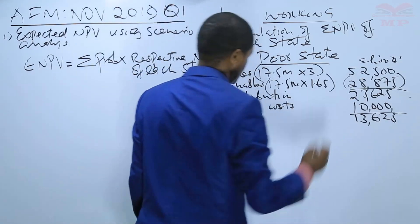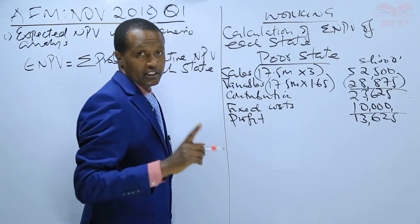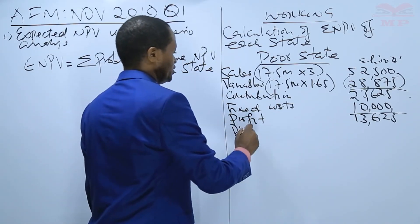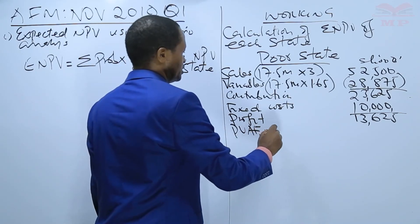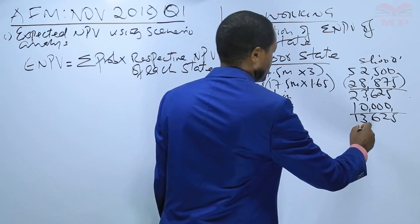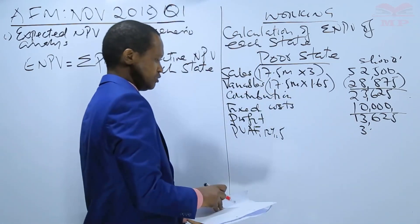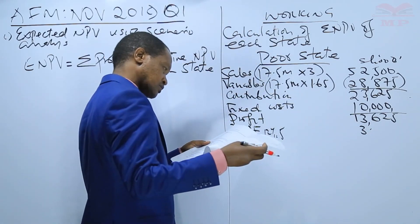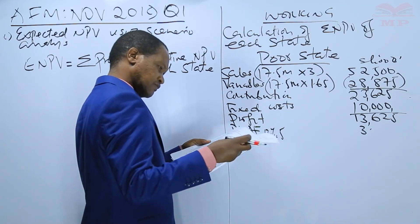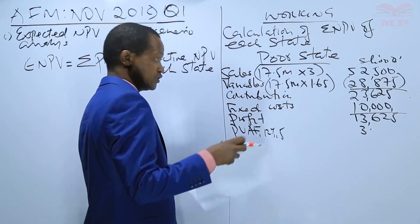This 13,625,000 is the profit. It is this profit we use to compute the present value. We multiply by the present value annuity factor at 12 percent for 5 years, which from the tables is 3.6048.